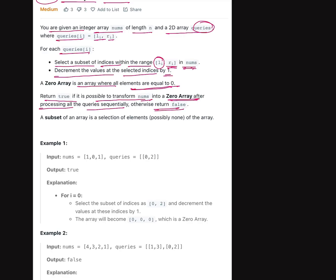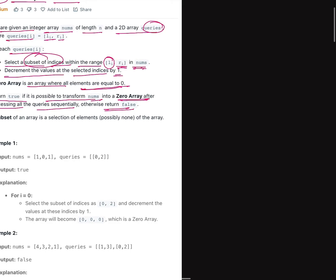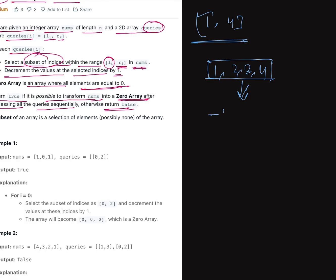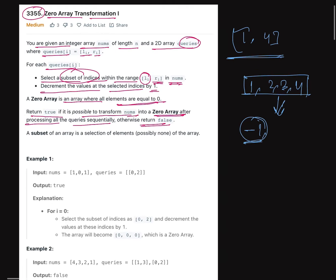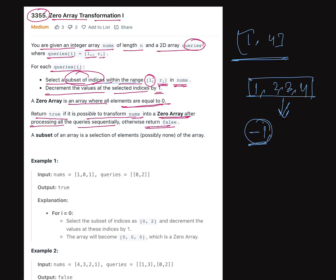So we have to select a subset of indices. Suppose l_i and r_i contains 1 and 4 — that's one query. We can select any of indices 1, 2, 3, 4, or none of them. For the selected indices, we decrease the value by 1. So select a subset of indices within the range l_i to r_i and decrement the values at selected indices by 1. Finally, after doing all operations from queries, we check that all elements in nums are 0. If yes return true, else return false. The problem is clear.